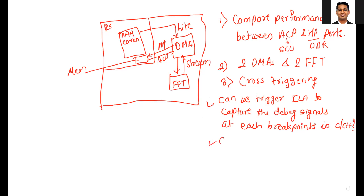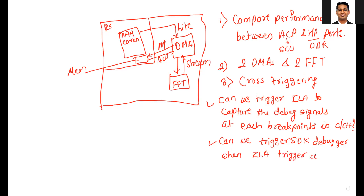The same concept applies in reverse: can we trigger the SDK debugger so that your C code stops at that point when the ILA trigger condition is met? So whenever a certain condition is met in the ILA and the ILA gets triggered, can the ILA pause the execution of the C code at that particular time, so that we can see the value of the CPU registers or the value of the variables at that particular time? This is the concept of cross-triggering which we are going to use today.